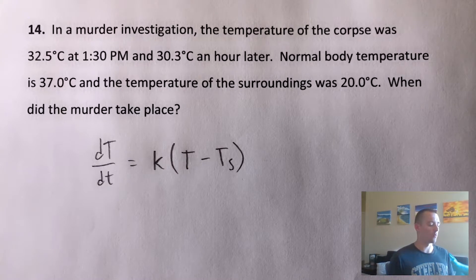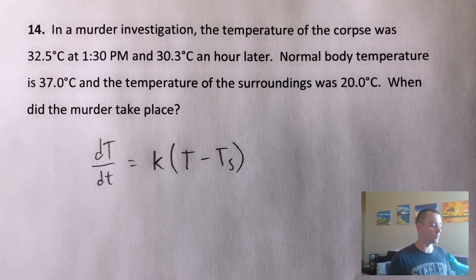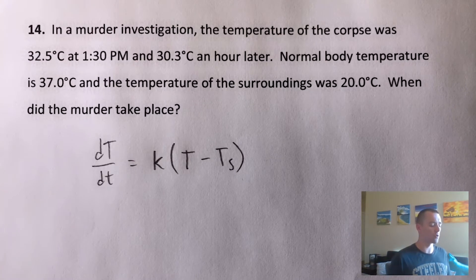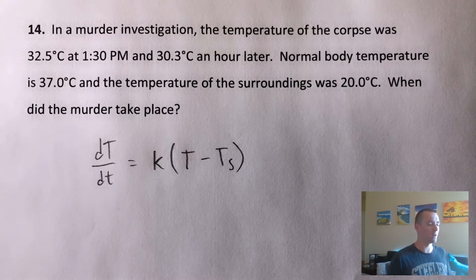Let's go ahead and just jump into this problem. In a murder investigation, the temperature of the corpse was 32.5 degrees at 1:30 PM and 30.3 degrees an hour later. Normal body temperature is 37 degrees and the temperature of the surroundings was 20 degrees. When did the murder take place?